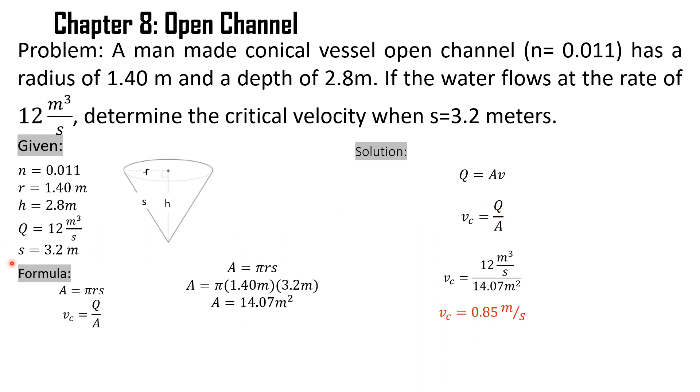Where discharge equals 12 cubic meters per second over the area, which is 14.07 meters squared. The answer will be 0.85 meters per second, which is the value for the critical velocity.